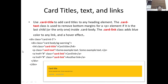In the code, we have a division with class card and top margin. Inside, we have the card-body. Inside the card-body, we have an h4 with class card-title, a paragraph with class card-text, and two links with class card-link. The output has a yellow background because bg-warning is applied.